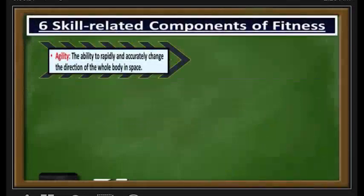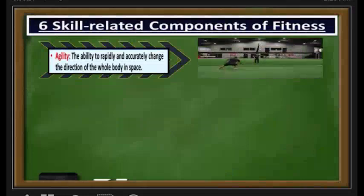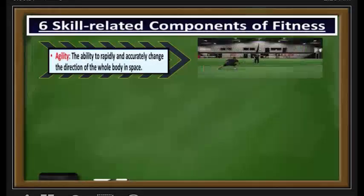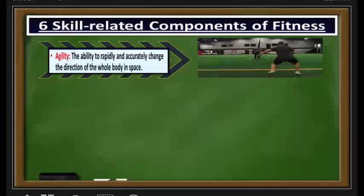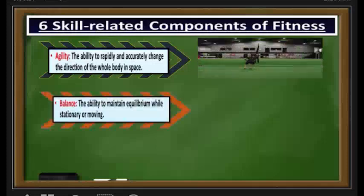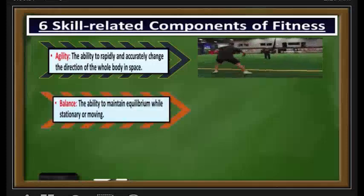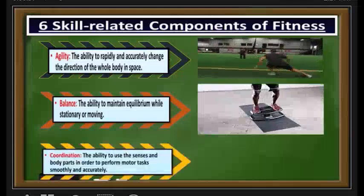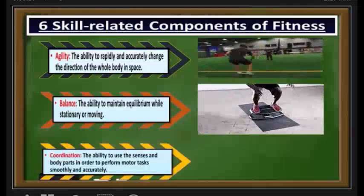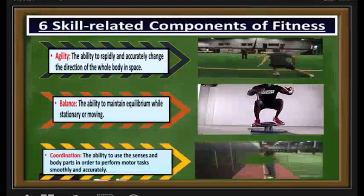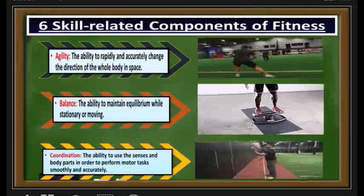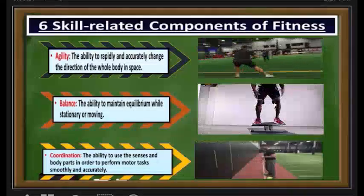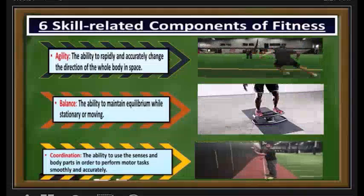Agility is the ability to rapidly and accurately change the direction of the whole body in space. Balance is the ability to maintain equilibrium while stationary or moving. Coordination is the ability to use the senses and the body parts in order to perform motor tasks smoothly and accurately.